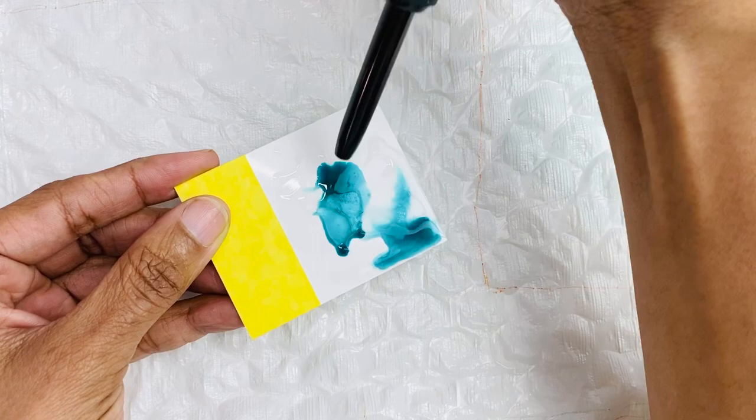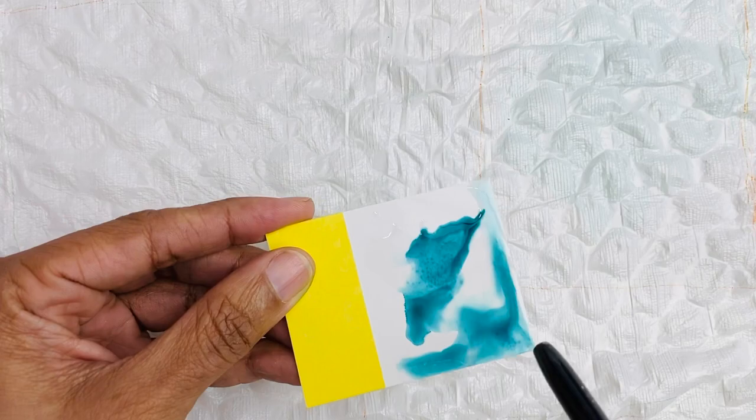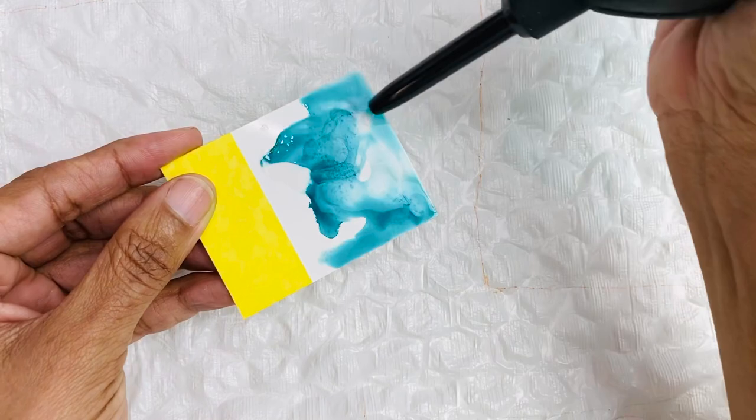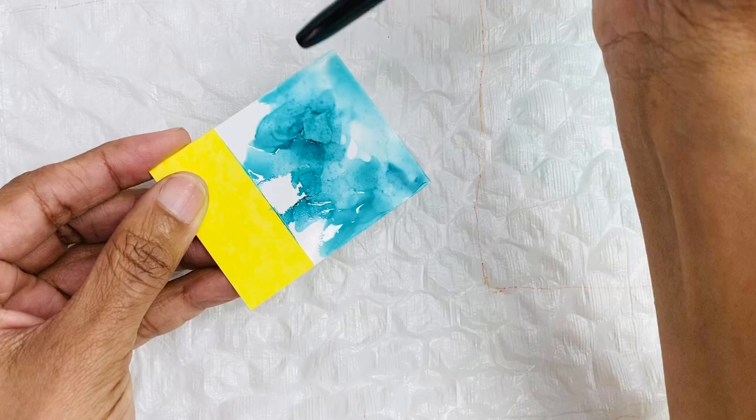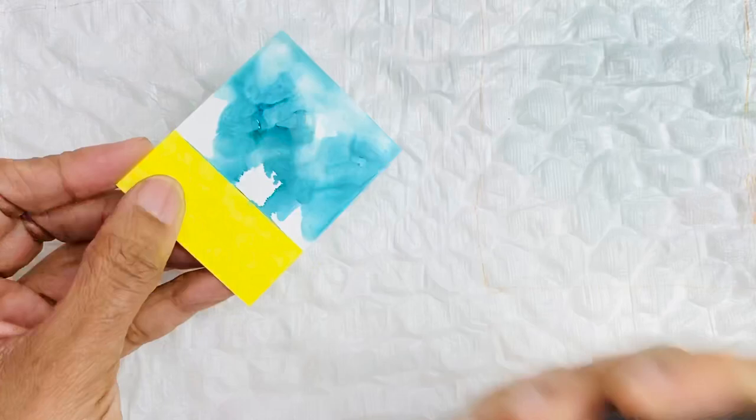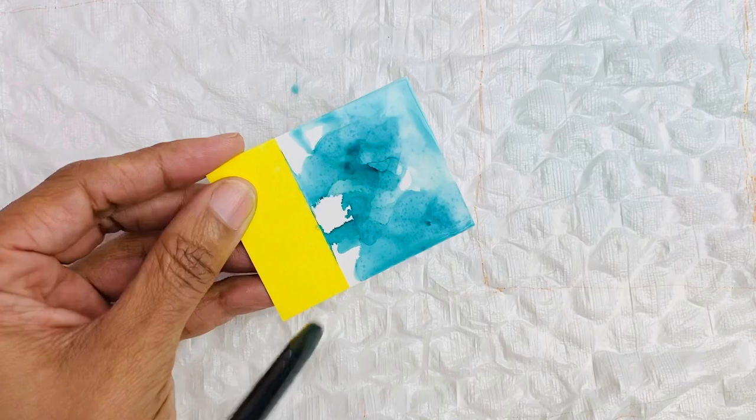I'm going to start moving that alcohol ink around on the paper, on your swatch card by just simply blowing it in a couple of directions. And if you ever feel like you don't have enough alcohol ink, or you don't have enough of the isopropyl alcohol on the paper, you can just put down some more to get the effect that you prefer.